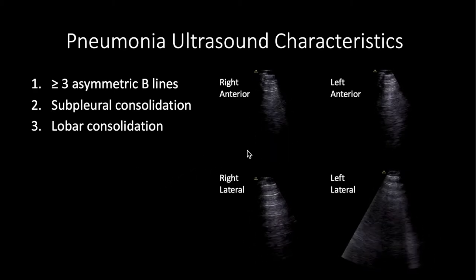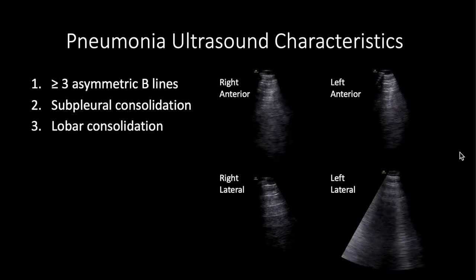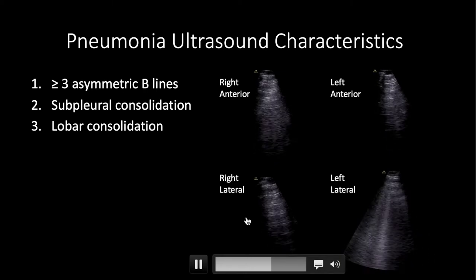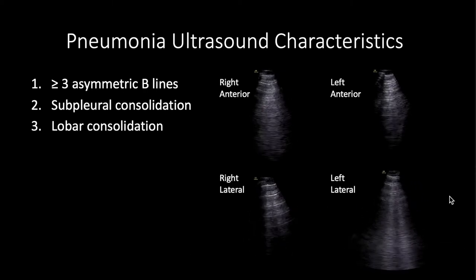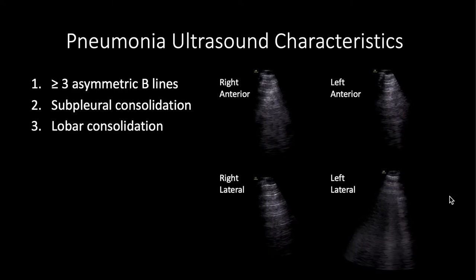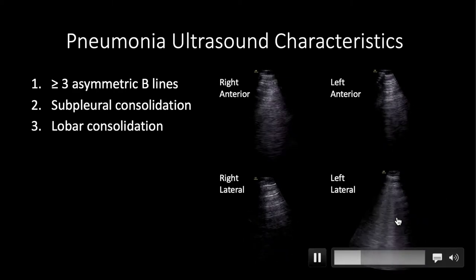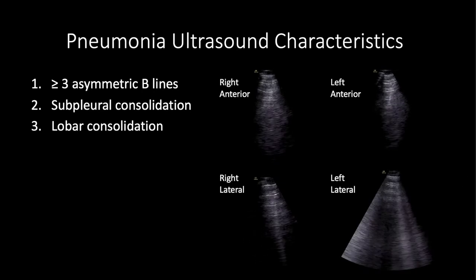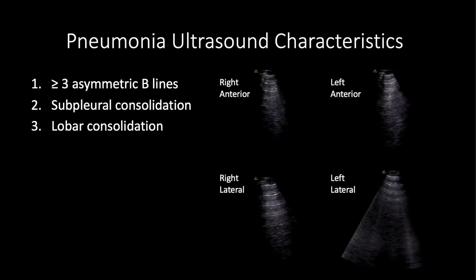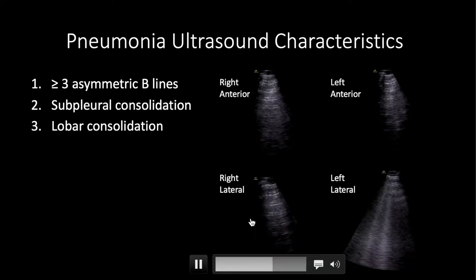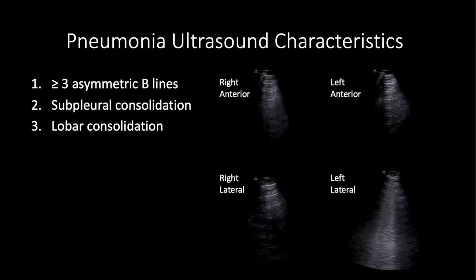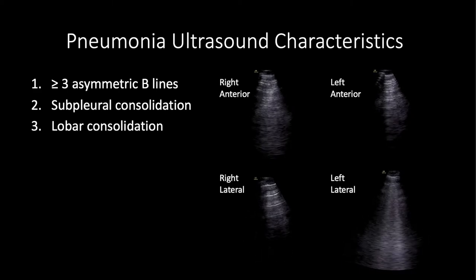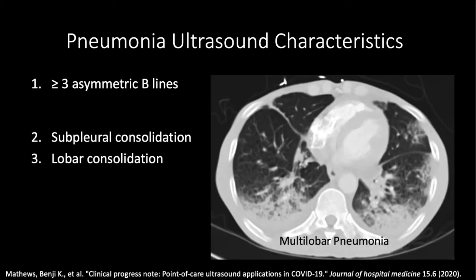Here's an example of an asymmetric B-line distribution. This patient has A-lines anteriorly and A-lines in the right lateral lobe, but when you place the probe on the left side, you have a focal B-line infiltrate. When you have three or more B-lines, it tells you there's a clinically significant infiltrate. This asymmetry is more common with pneumonia and less common with CHF, which tends to be bilateral in distribution.